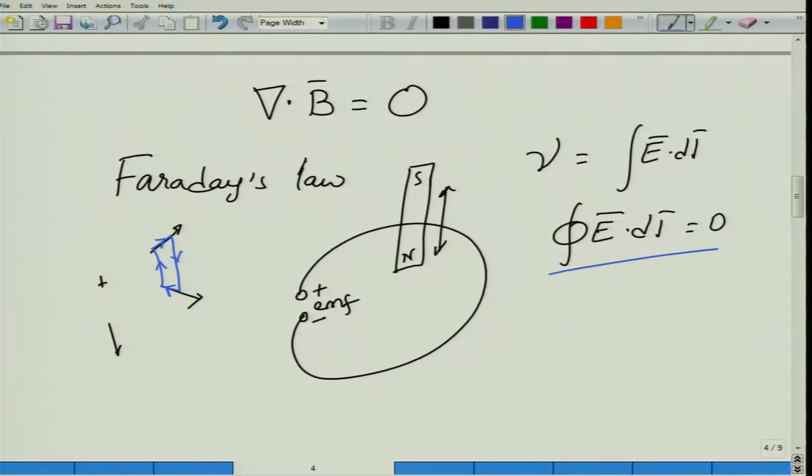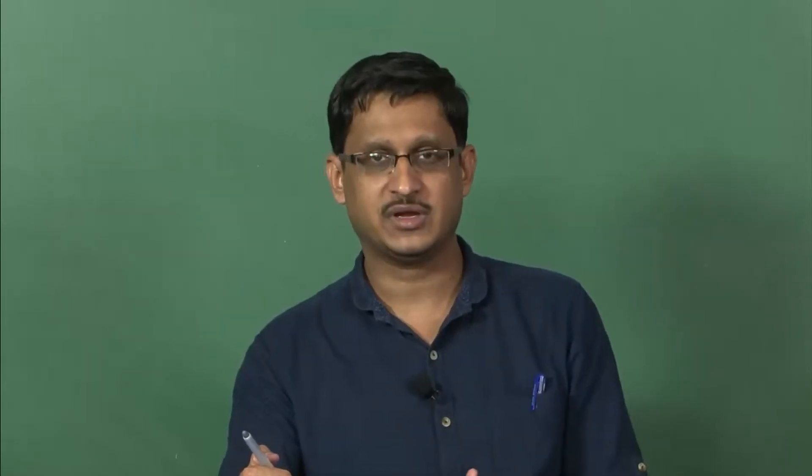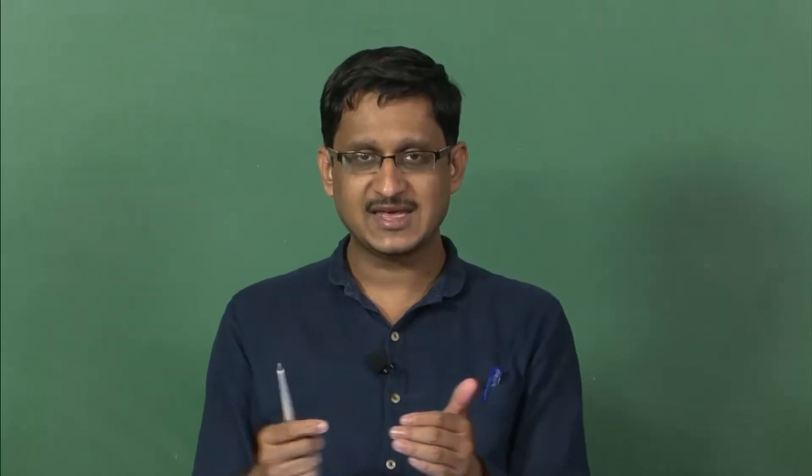So what Faraday discovered was that this quantity E dot DL would not be equal to 0, there will be a nonzero EMF generated, provided there is a changing magnetic field. In fact, he called it as changing magnetic flux linkage. There is a certain flux linking to this circuit, and if this flux linkage to this circuit is changing with respect to time, then there will be a certain EMF induced.